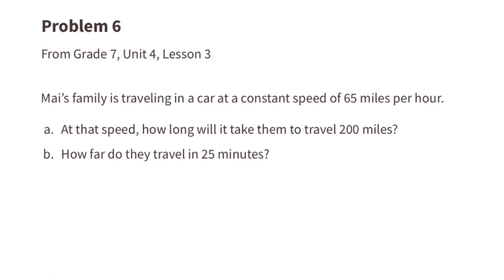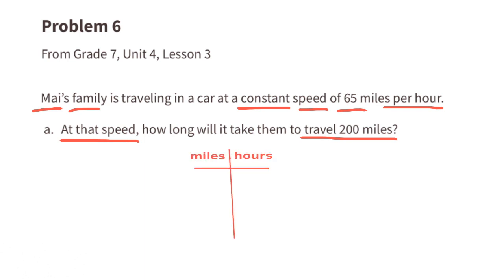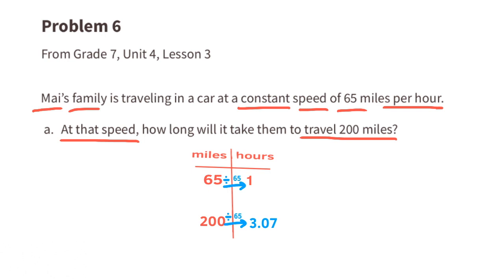Problem number 6 from 7th grade unit 4 lesson 3: a family is traveling at a constant speed of 65 miles per hour. Part A: how long will it take to travel 200 miles? Using a table with miles and hours — the car travels 65 miles in one hour. Dividing 200 by 65 gives approximately 3.07, so it will take about 3.07 hours to travel 200 miles.